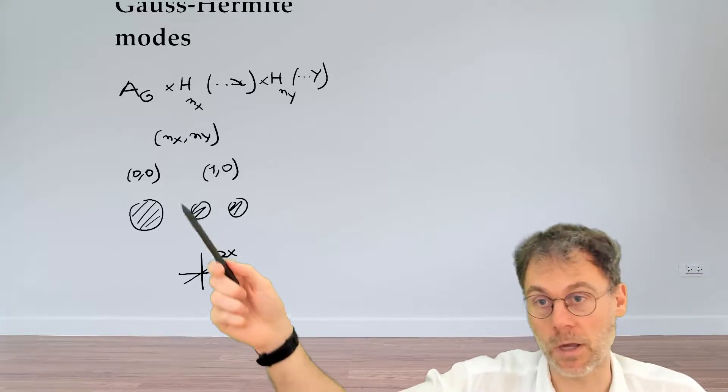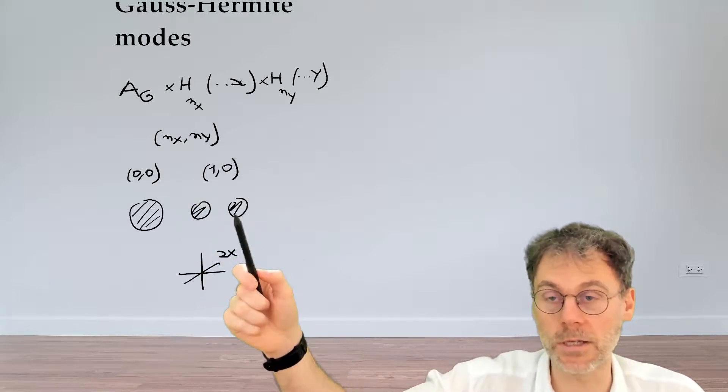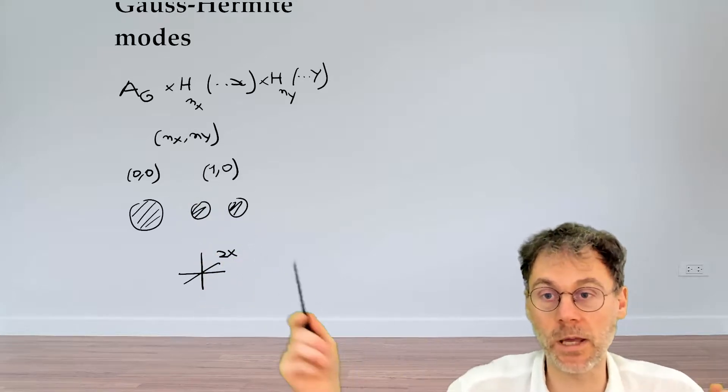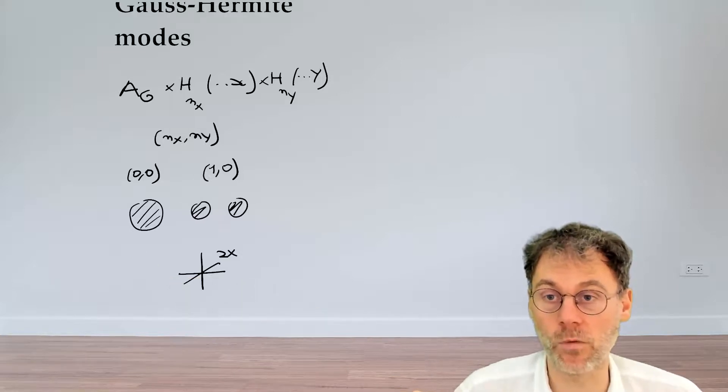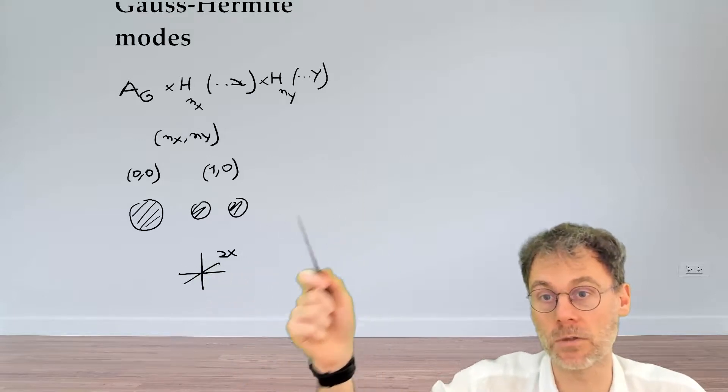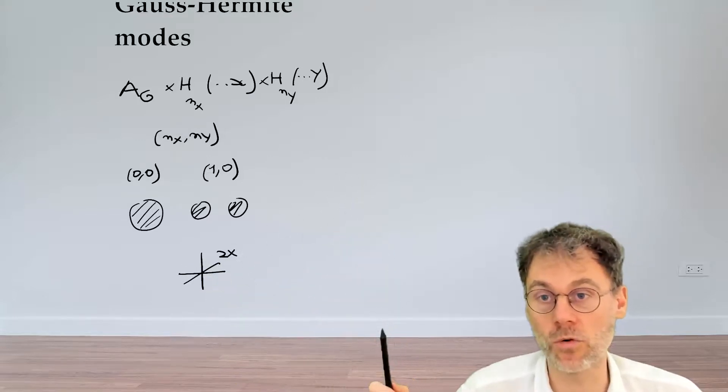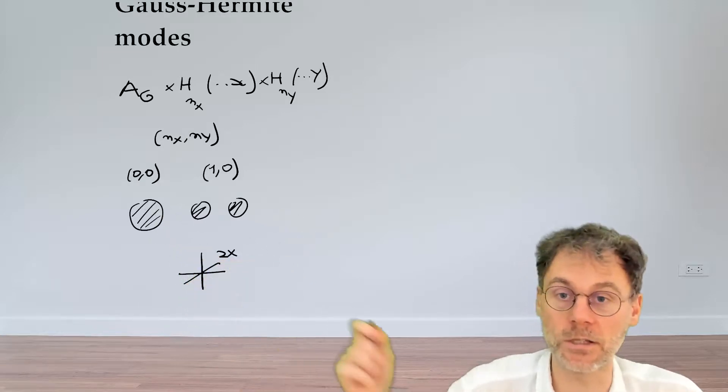And you will also notice, okay my drawing is not very accurate, that this higher-order mode is actually much more extended in space than the fundamental mode. And why is that? Well, if you think about this for a while, it's pretty obvious because this Hermite polynomial here is something which increases towards infinity. So this will tend to emphasize the tails of this Gaussian distribution.